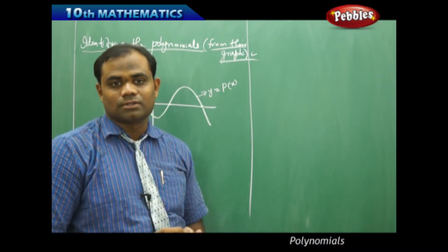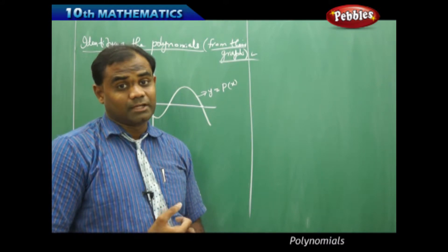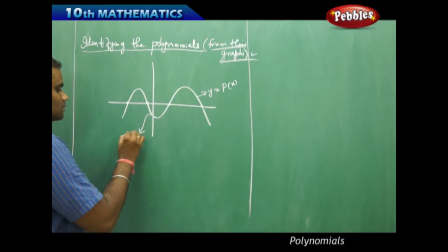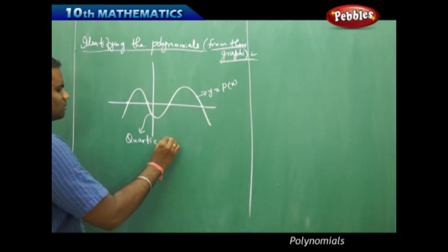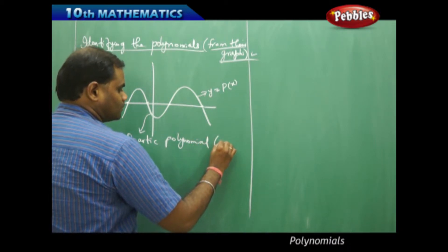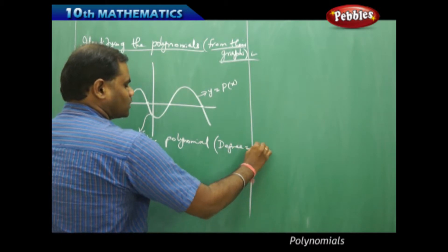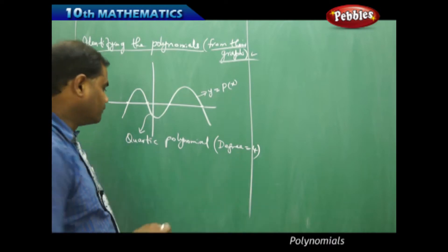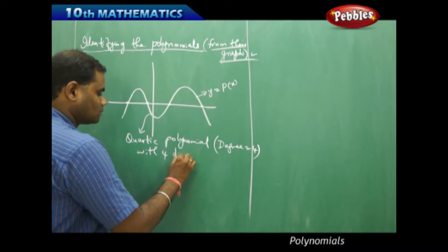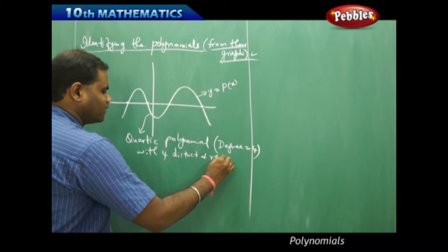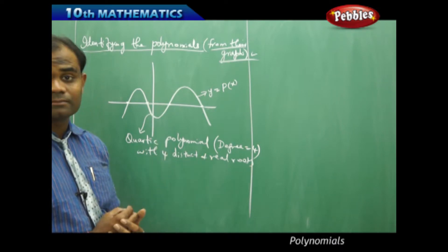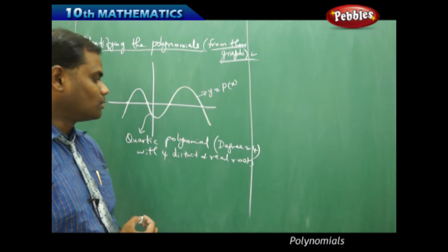Four x-intercepts or four zeros tells us that the degree of the polynomial is four. Therefore, this is a quartic polynomial with degree four. A quartic polynomial has degree four with all four roots being distinct and real, because all four roots are crossing the x-axis. This is how we identify a quartic polynomial.